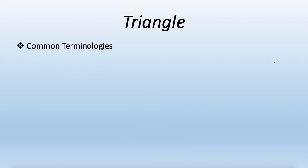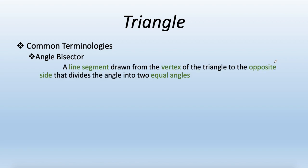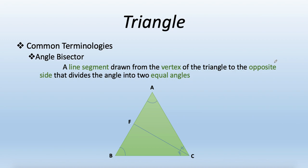The third common term is angle bisector. As the name states, it bisects the angle into two equal parts — a line segment drawn from the vertex of a triangle to the opposite side that divides the angle into two equal angles. In triangle ABC, the angle bisector from A divides angle A into two equal portions, from B divides angle B, and from C divides angle C into two equal portions.